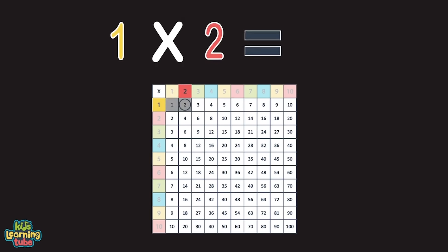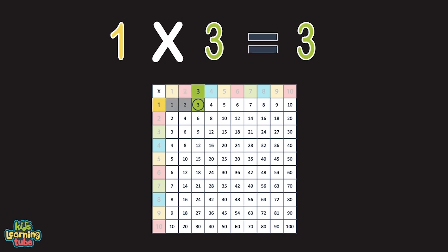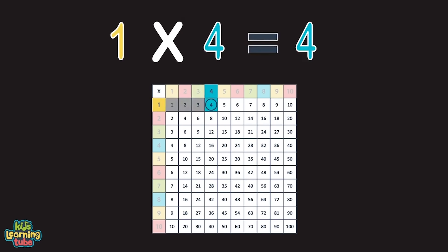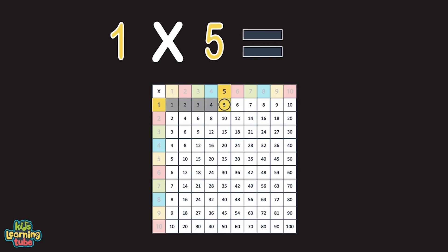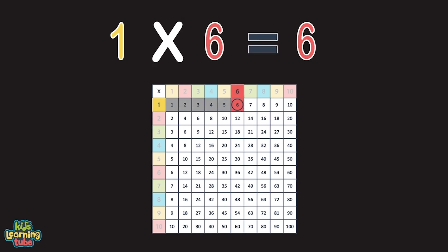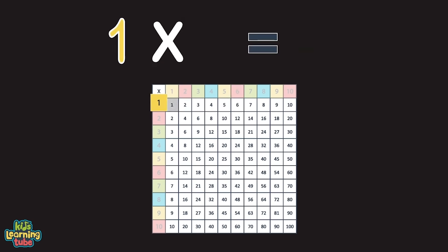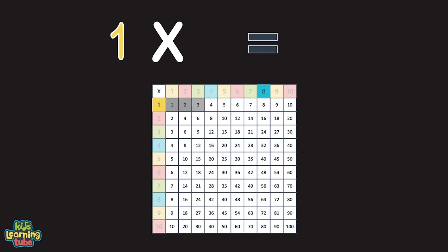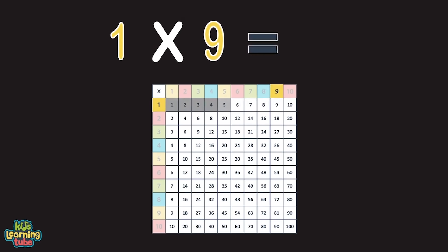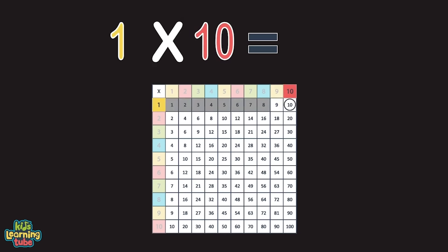One times two equals the number two. And one times three equals three, you see. One times four equals the number four. And one times five equals five. And one times six equals the number six. One times seven equals seven. One times eight equals eight cause it's great. And one times nine equals nine, it's so fine. One times ten does equal ten.